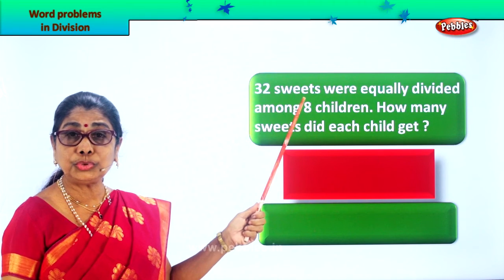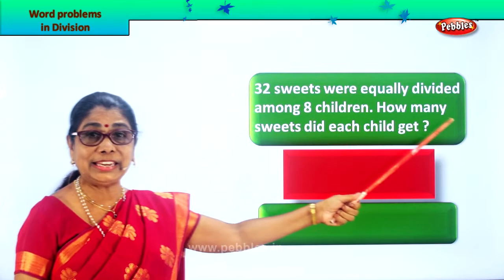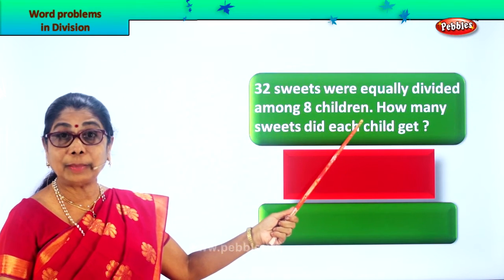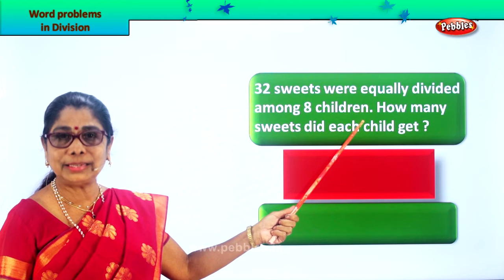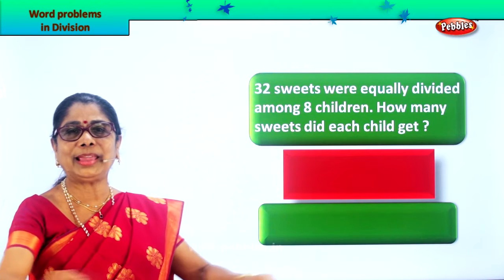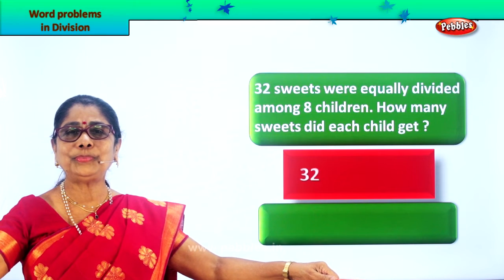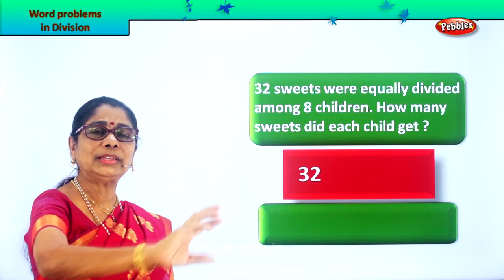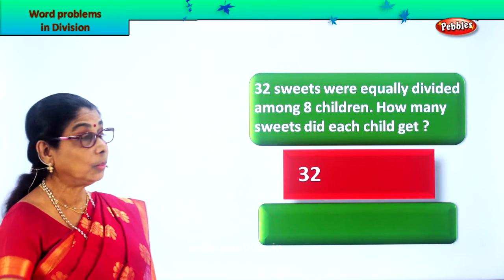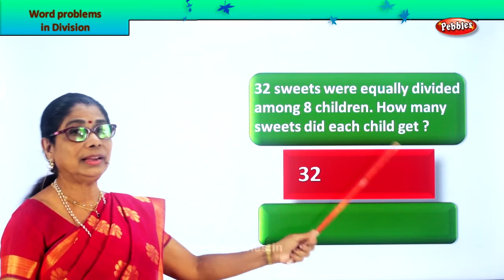32 sweets were equally divided among 8 children. How many sweets are there? 32. How many children are there? 8 children. So we have 8 children standing in a queue, and we have 32 sweets to be given equally — divided equally among 8 children. What's your question? How many sweets did each child get?